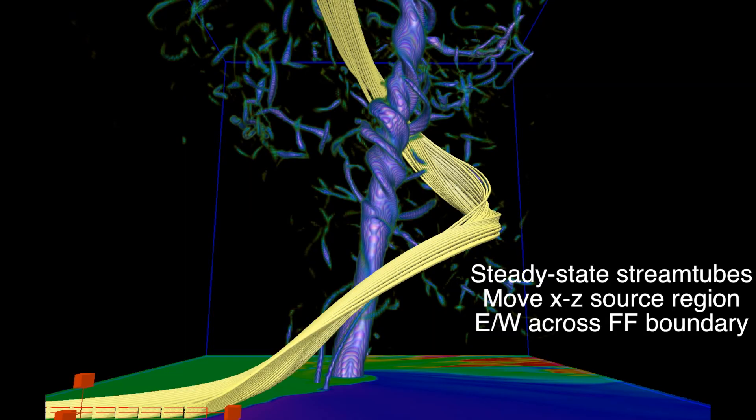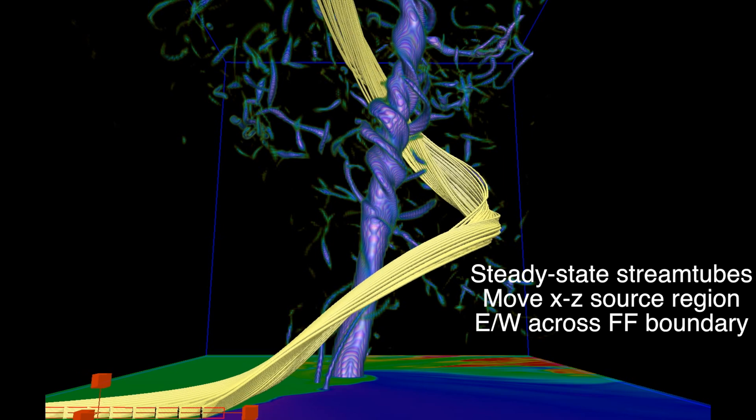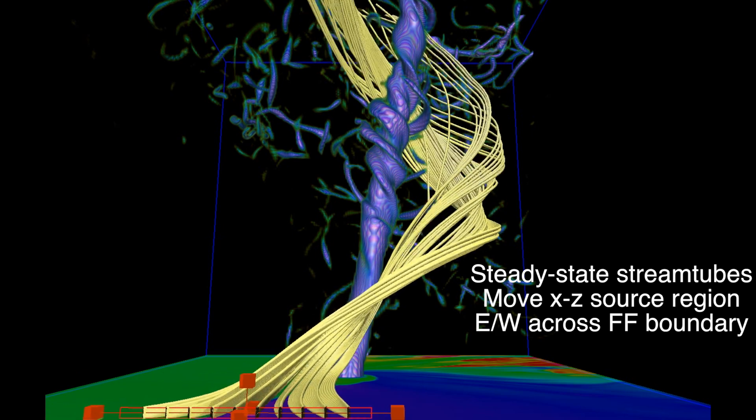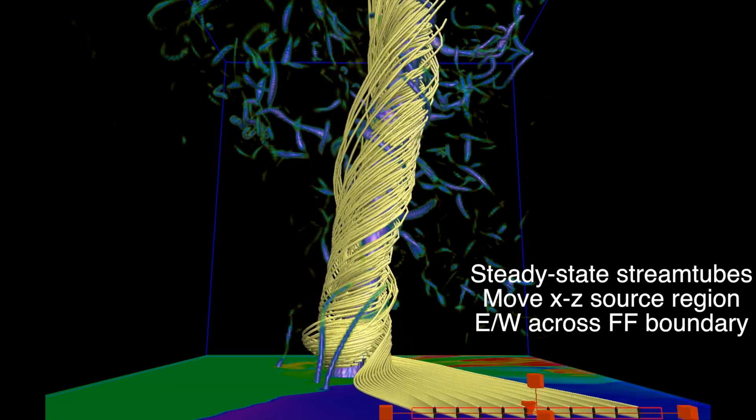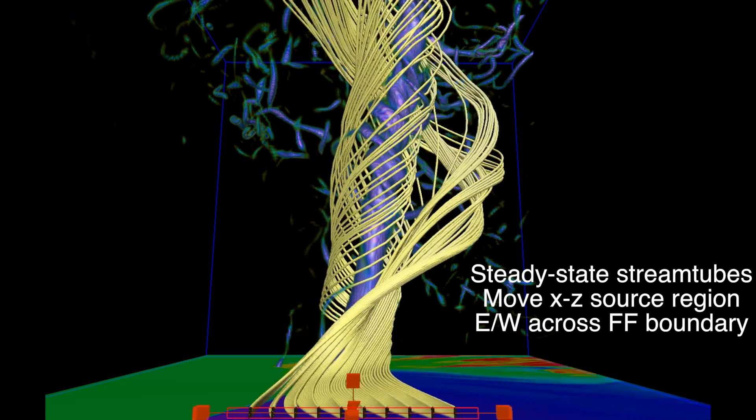Here we look at steady state stream tubes during tornado maintenance. The origin of the stream tubes is moved across the forward flank boundary. This sequence shows the different path air takes that is ahead of the storm versus air that originates from within the storm's cold pool.